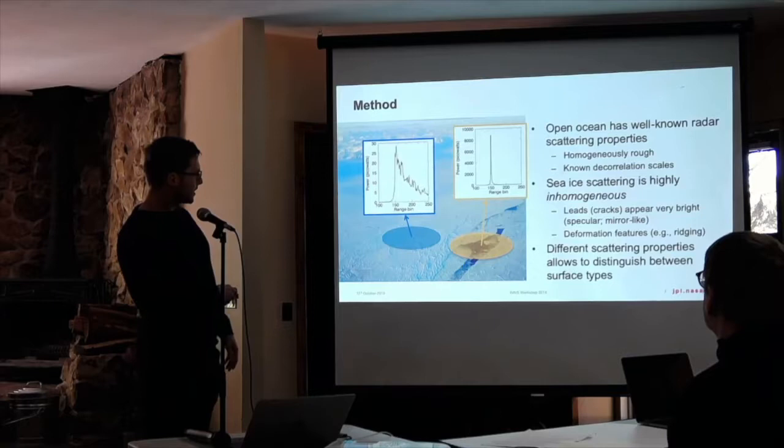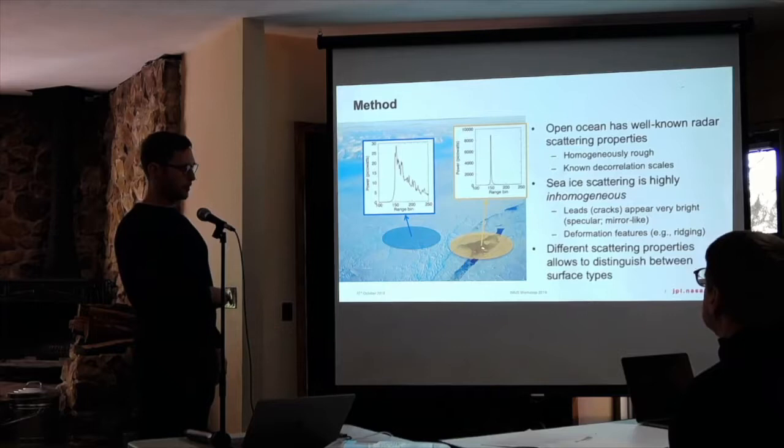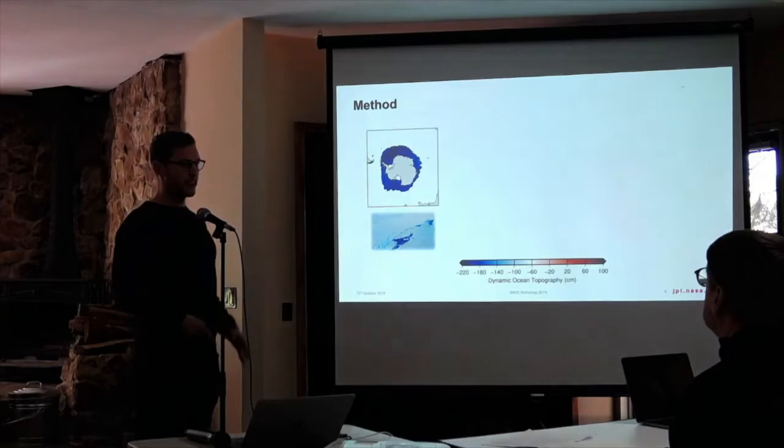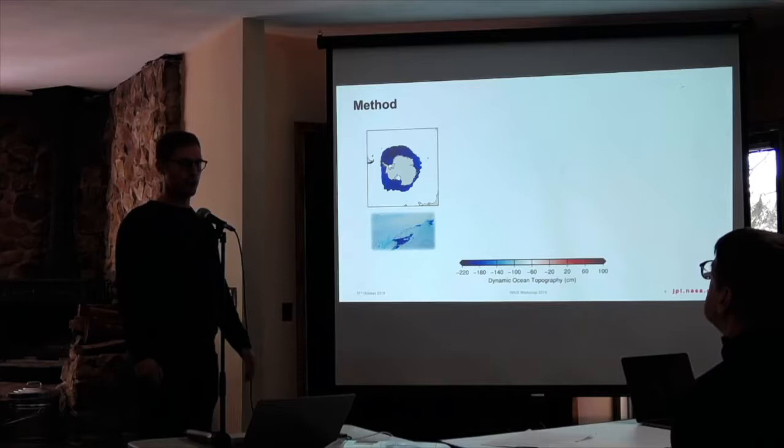Because when you get such a different radar response, it's easy to distinguish between the two different surface types. What we do essentially is find all of the radar echoes that look like leads or cracks in the ice and extract sea surface height from those cracks. We get enough of those measurements to make monthly composites of sea level in the ice-covered portion of the ocean.